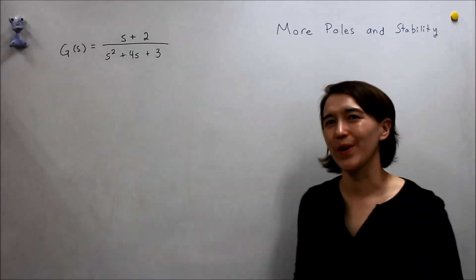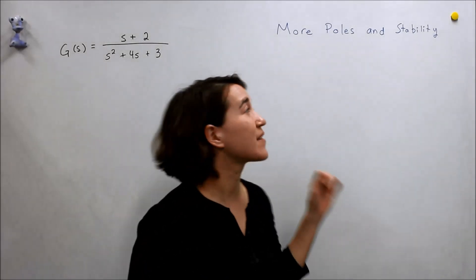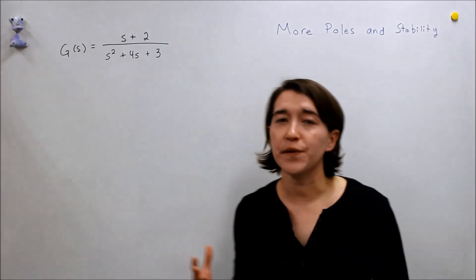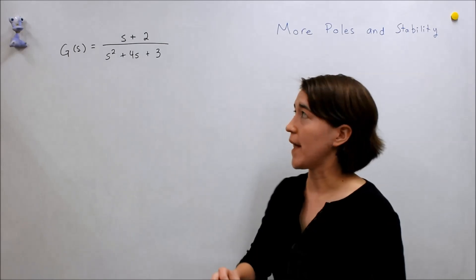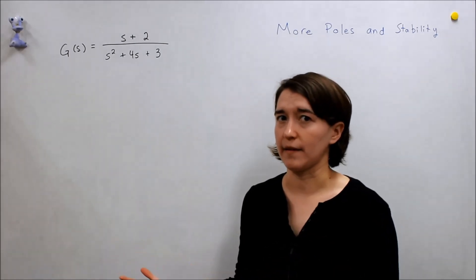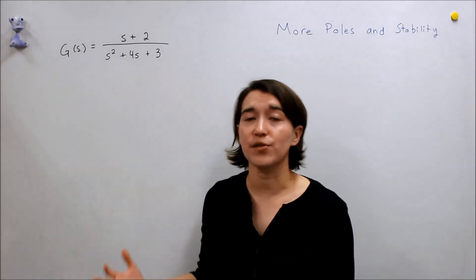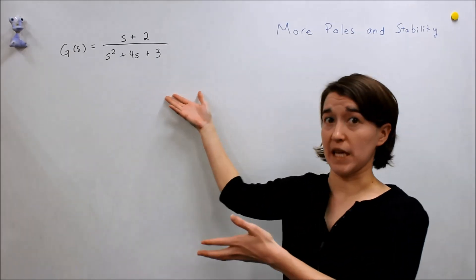We'll be looking at some more transfer functions and stability by looking at the poles of the system. Before we did a really simple example, and now we're going to move to a little bit more complicated examples. This is an example of after you've modeled your system, you may have something like this.